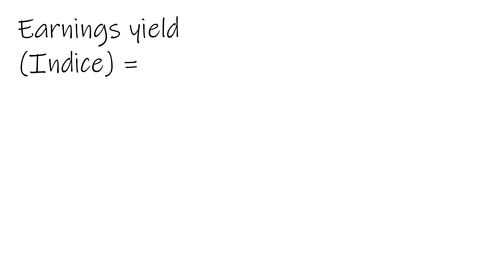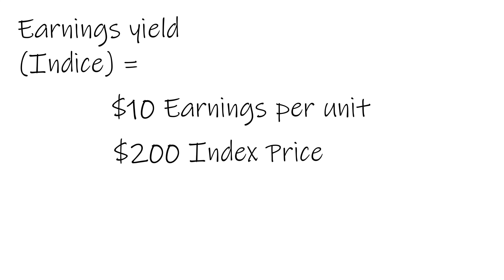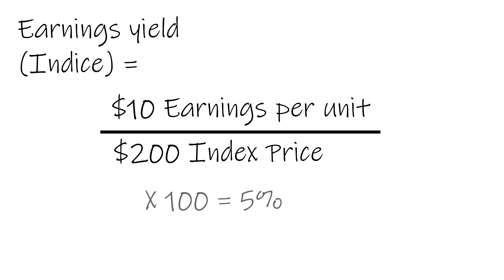Say the index is delivering $10 in earnings per unit in its most up-to-date earnings, and its current price is $200. The earnings yield is 10 divided by 200, multiplied by 100, to arrive at a 5% earnings yield. Some calculations, particularly for indexes, use an averaged or smoothed earnings to help dilute the effect of any outlier years.